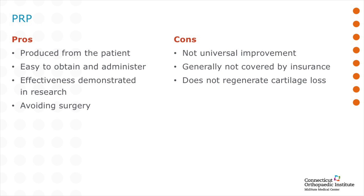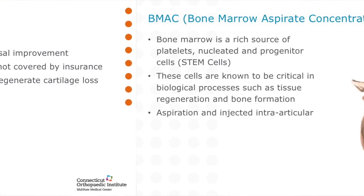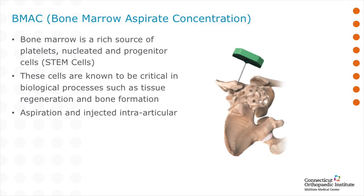Some of the cons: there's not universal improvement with all patients, and it's generally not covered by your insurance. One thing to remember is it won't regenerate the cartilage lost, but it'll help with the healing process with the tissues around that. Another stem cell option includes a bone marrow aspirate — here in the office we can obtain a small sample of bone marrow. This marrow contains those healing platelets as well as other cells that help your body heal and regenerate tissue. Like the PRP, we then aspirate these contents and inject them back into your knee.